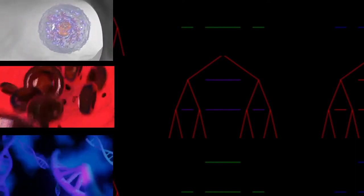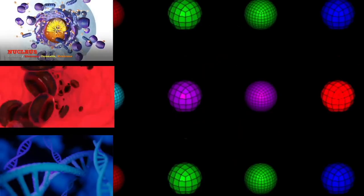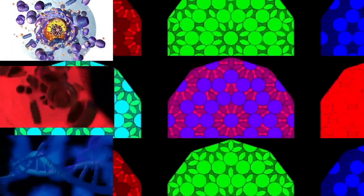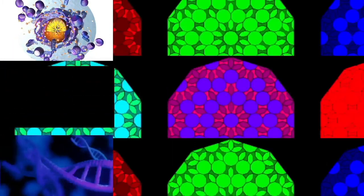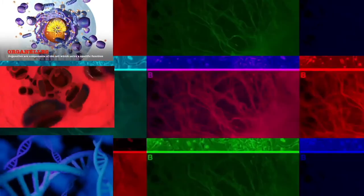Eukaryotes emerged approximately 2.1 to 1.6 billion years ago, during the Proterozoic Eon, likely as flagellated phagotrophs. Eukaryotic cells typically contain membrane-bound organelles, such as mitochondria and Golgi apparatus, and chloroplasts can be found in plants and algae.